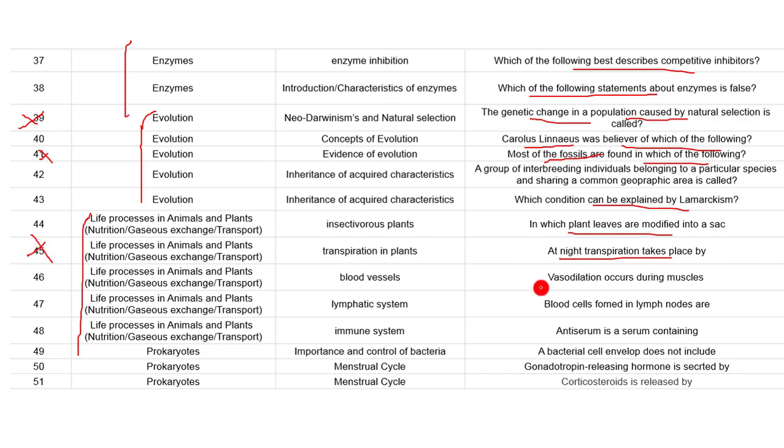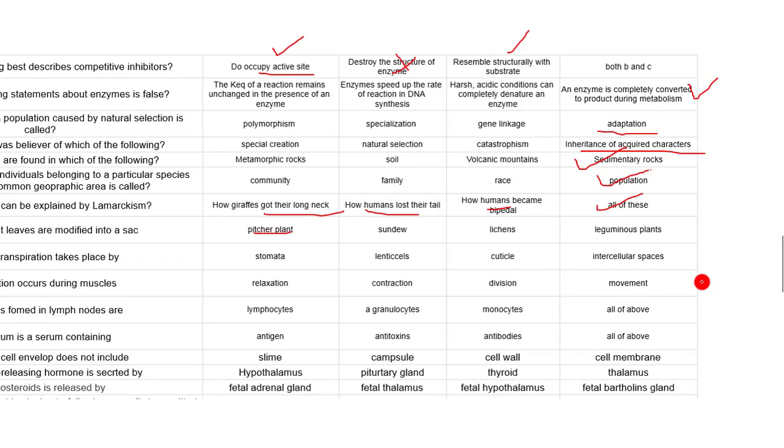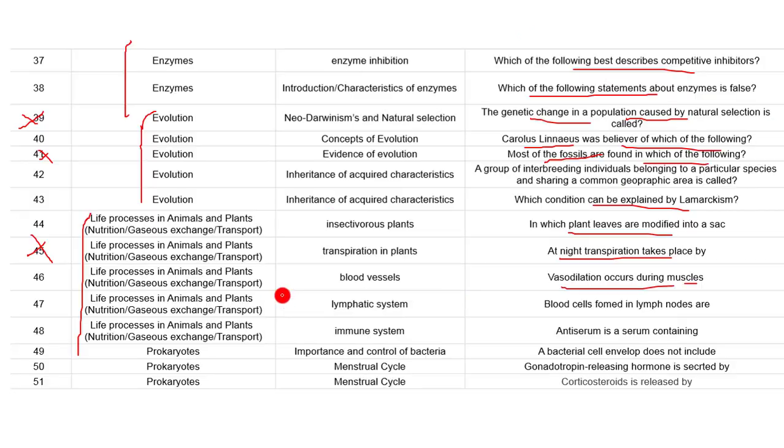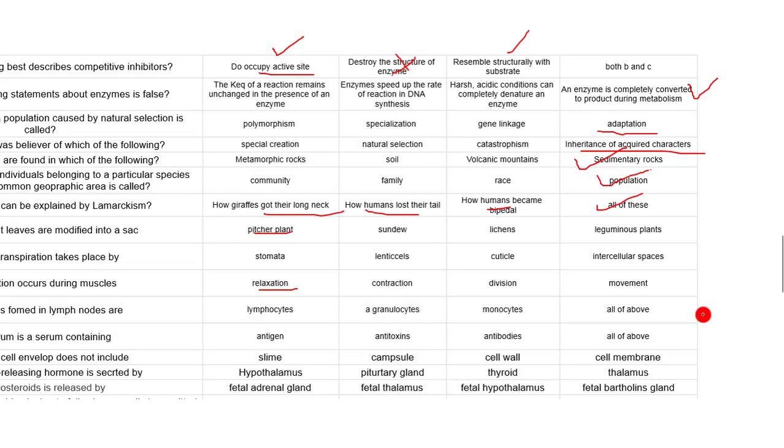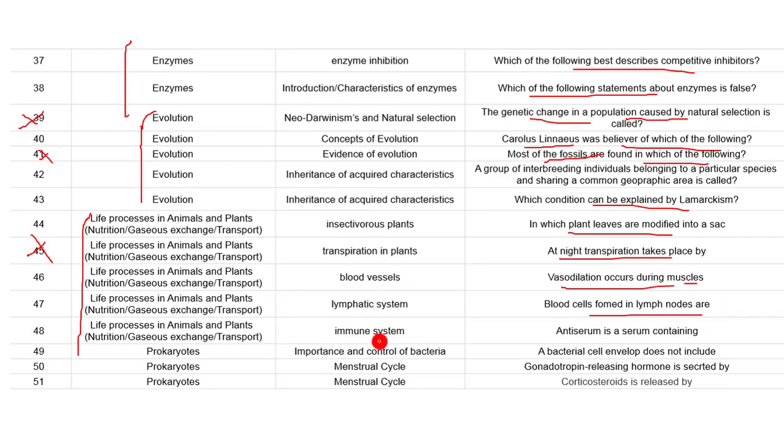Vasodilation occurs during muscles relaxation. When the muscles contract, the vessel will be compressed, so it will be vasoconstriction. When the muscles relax, then vasodilation occurs. Blood cells formed in the lymph nodes are lymphocytes - B lymphocytes and T lymphocytes.